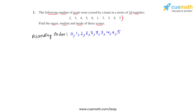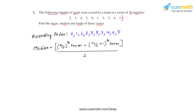The next step is to write the formula for finding the median. There are two formulas depending on whether the number of observations is even or odd. In this case the number of observations is 10, which is even, so we use the formula where n represents the number of observations, which is 10.